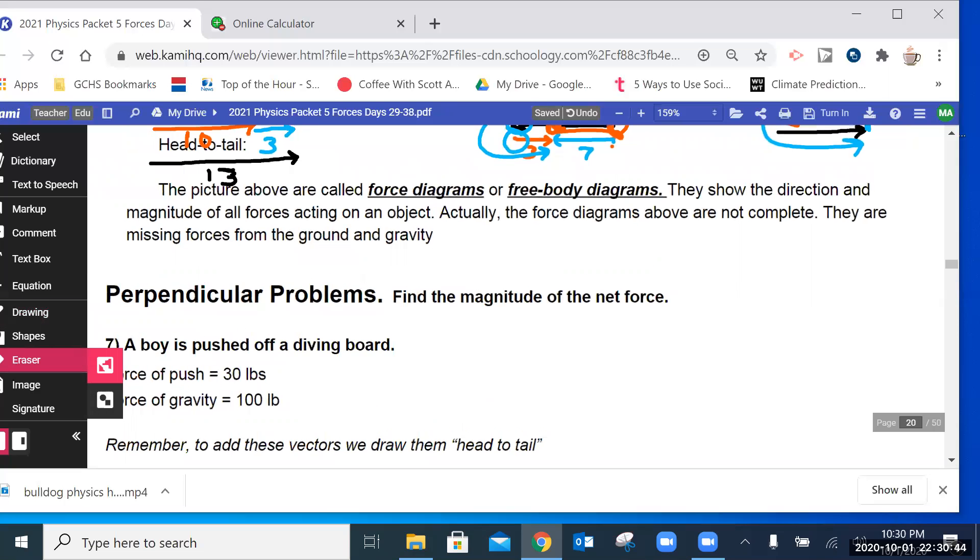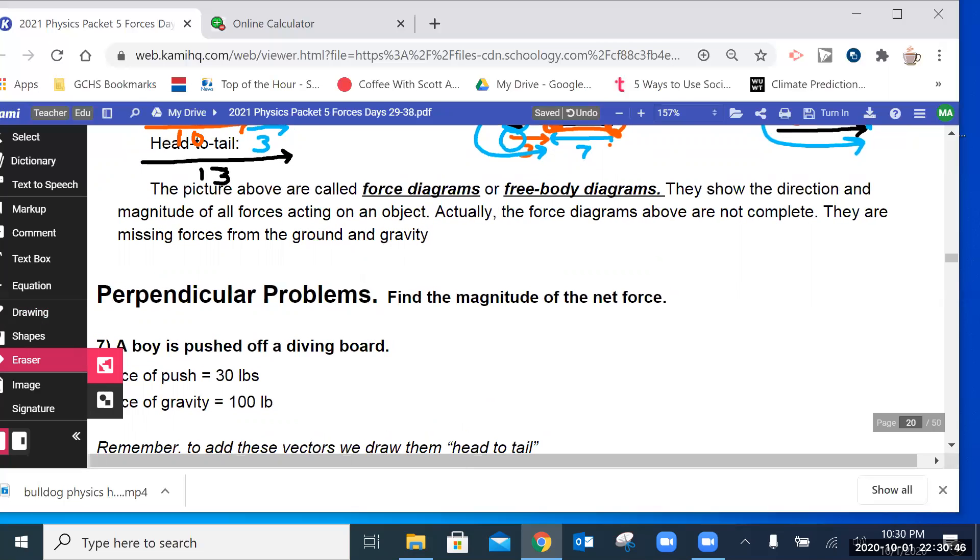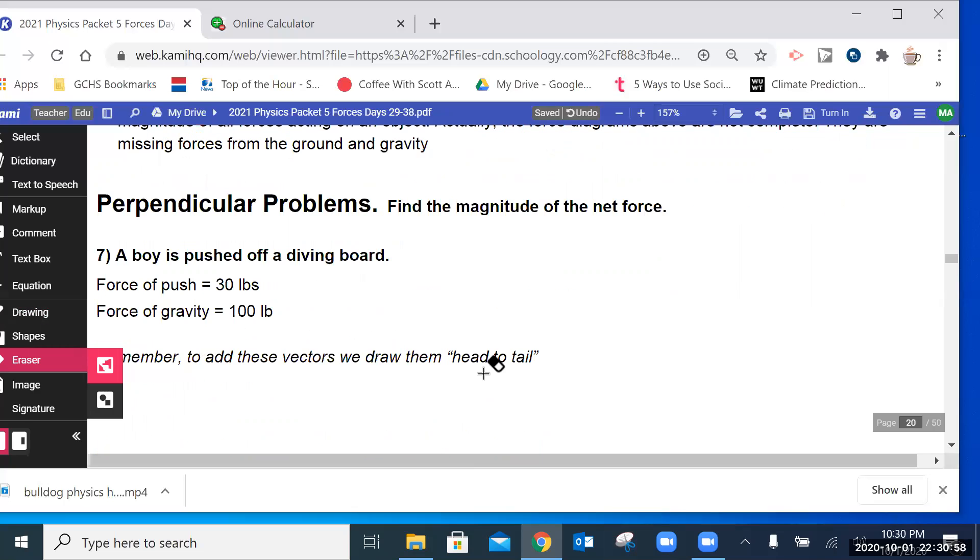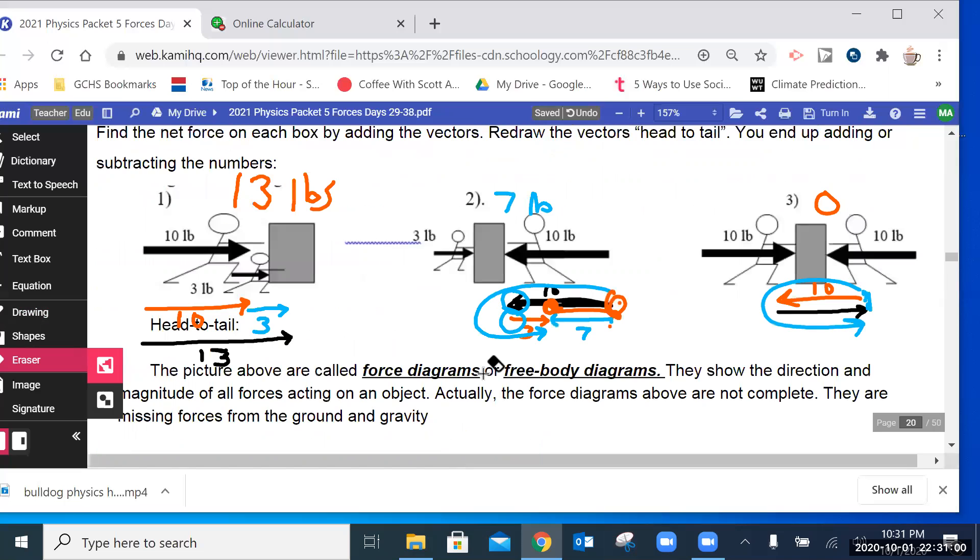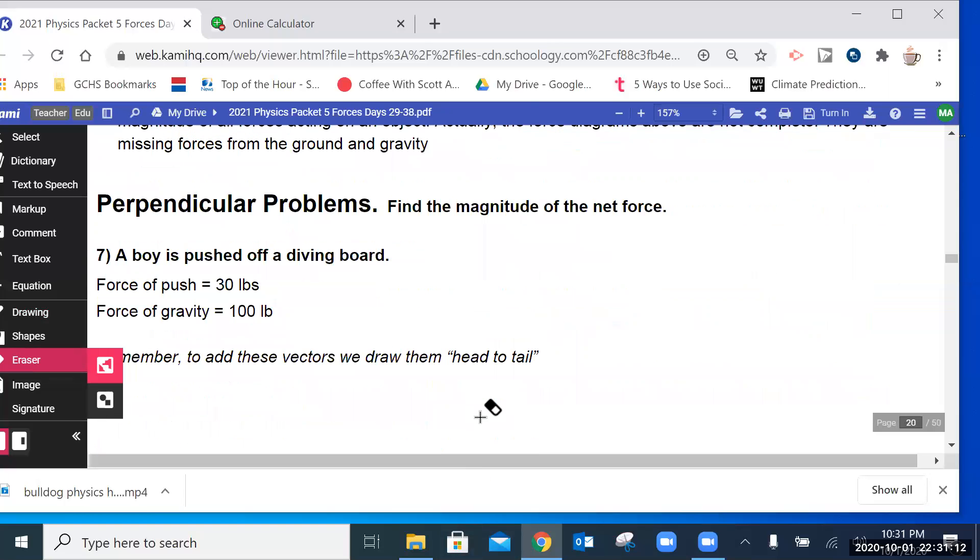The pictures above are called force diagrams or free body diagrams. They show the direction and magnitude of all the forces acting on an object. Actually, the force diagrams are not complete. They're missing forces from both the ground and gravity. Okay, now, these examples, the forces are acting in the same dimension, left and right. What if we were in two dimensions, not only left and right, but also up and down? So that's what these are all about.